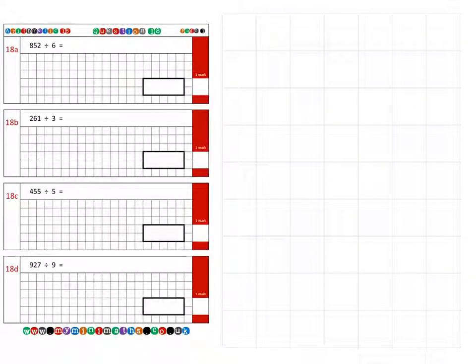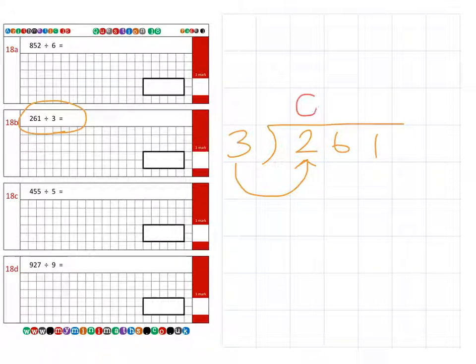On to the next question, 18b, which is 261 divided by 3. Exactly the same again. We're going to see how many threes fit into our first number, which is three into two. We can't do that, so we carry that two over to the tens column.